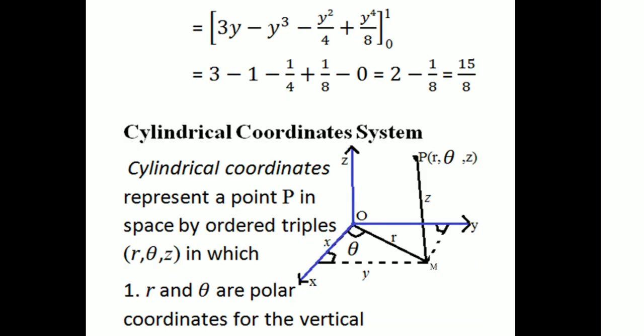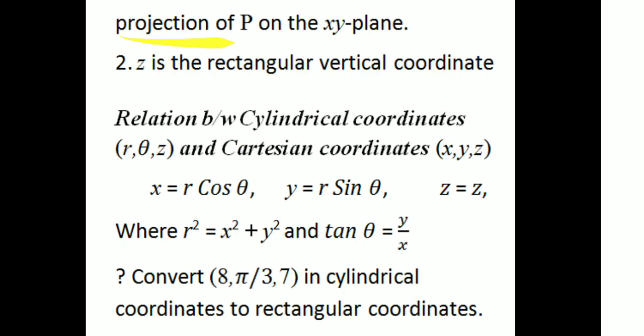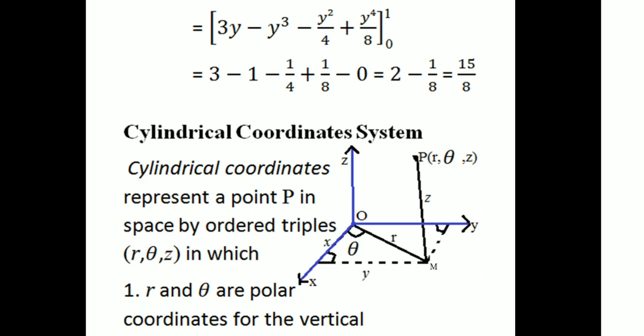If we have a cylindrical coordinate of a point P, we have a triple R, theta, z to denote it. This is the polar coordinate system for the projection of P on the xy plane. R, theta, z — where z is the vertical height. If we look at the figure of P on the xy plane, the cylindrical coordinate R, theta, z is the polar coordinate projection of the vertical projection.